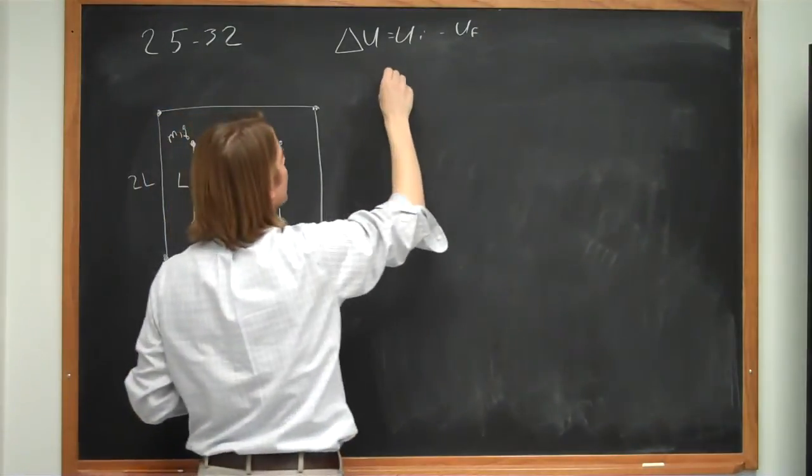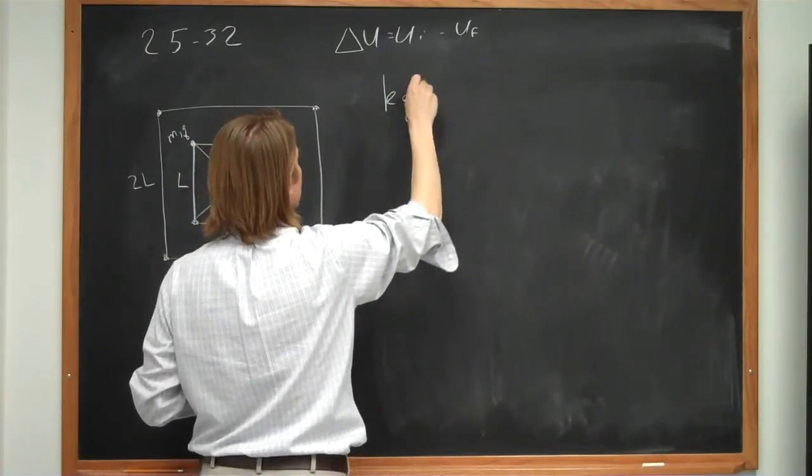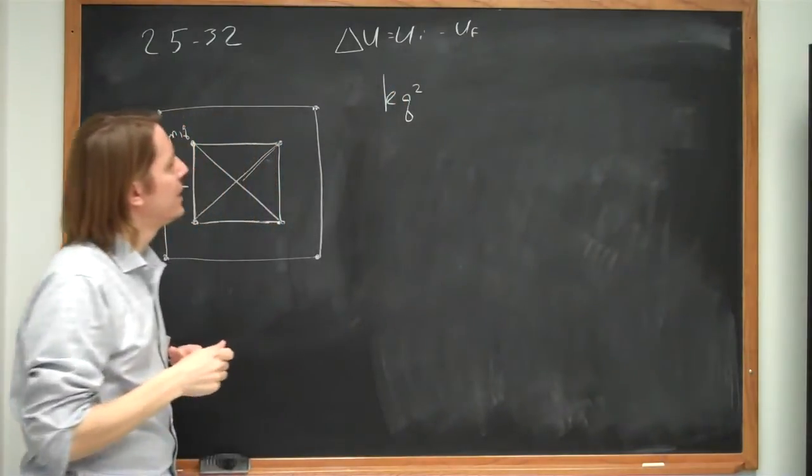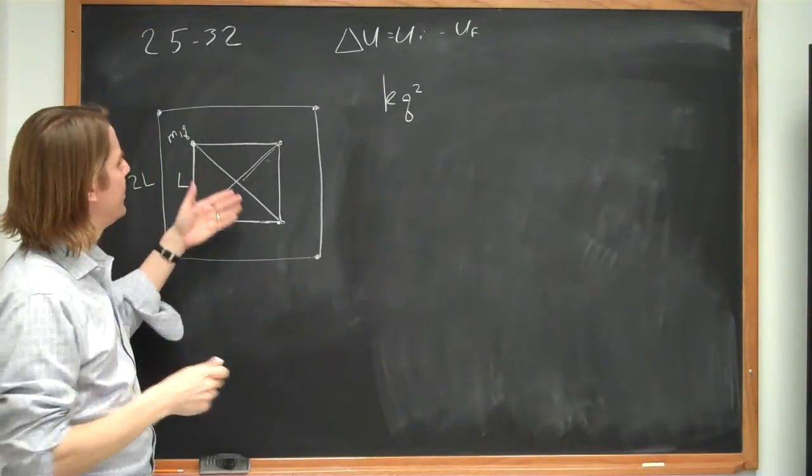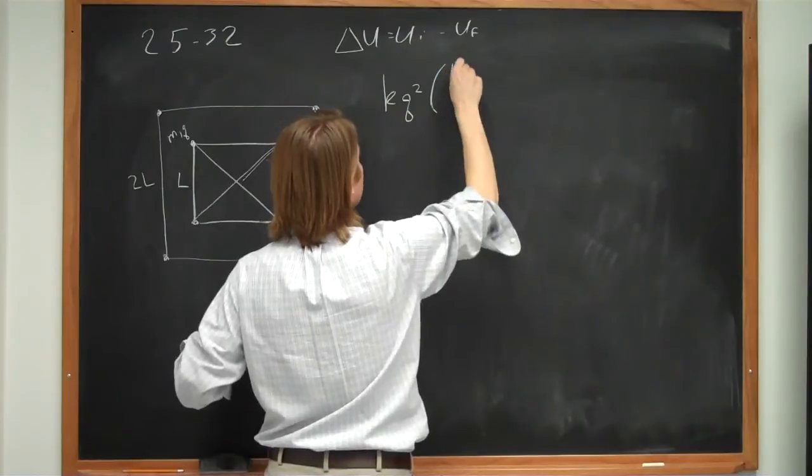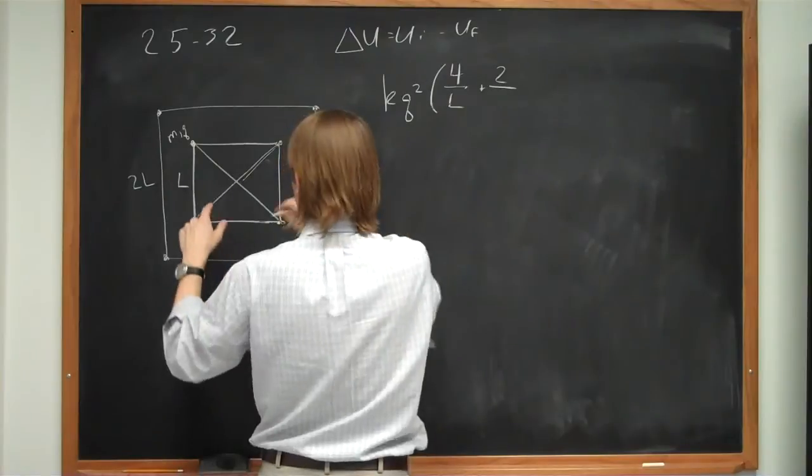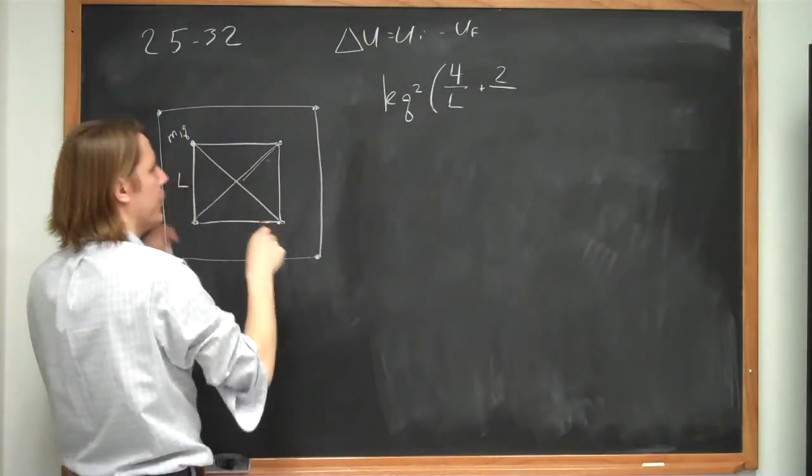So initially then, the initial energy is kq squared. So we're doing energy. kq squared, and then it would be over the distance. So let's write that as we have four over l, 4 of them are l plus 2 of them are square root of 2l farther away.